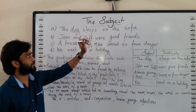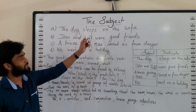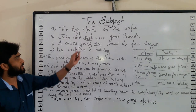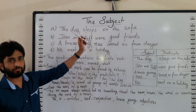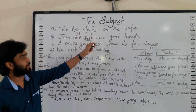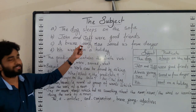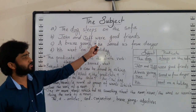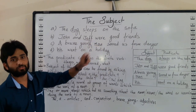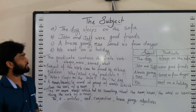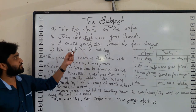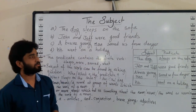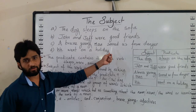In 'The dog sleeps on the sofa,' the action verb is 'sleeps.' In 'John and Jeff were good friends,' the verb is 'were.' And in 'A brave young man saved us from danger,' the action verb is 'saved'.